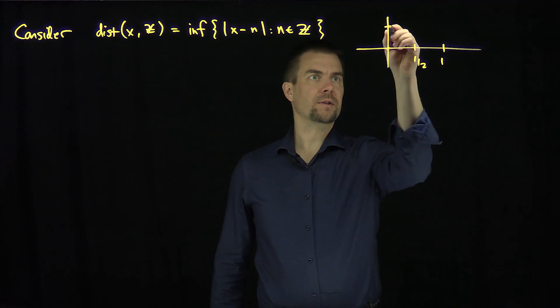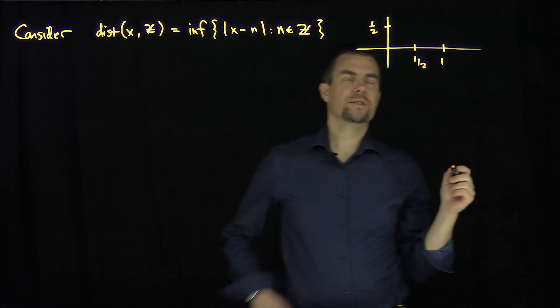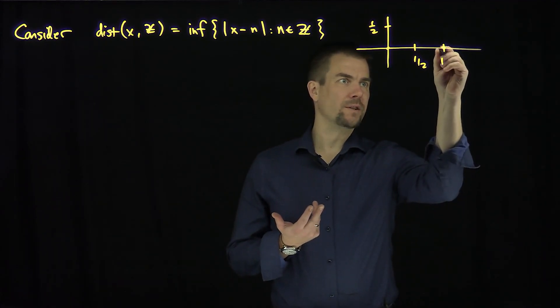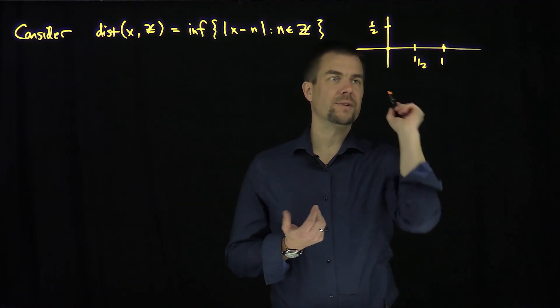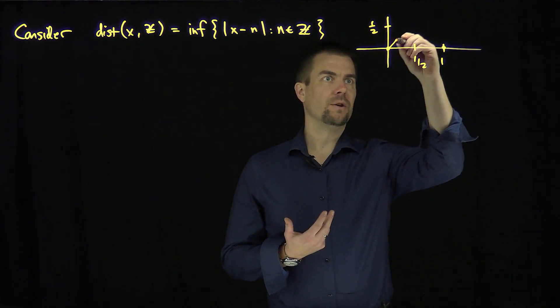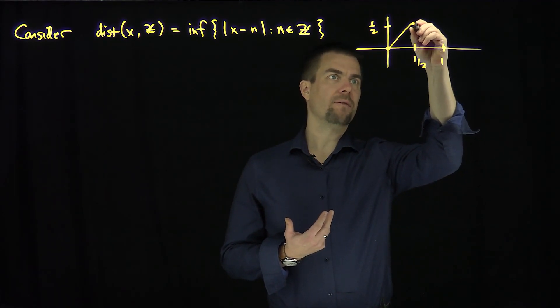Of course the distance, and that's a value of one half - the distance from zero to the integers is zero because zero itself is an integer. The distance from one to the integers is zero because one is an integer itself. And then what happens? The distance away from an integer grows linearly up to half.